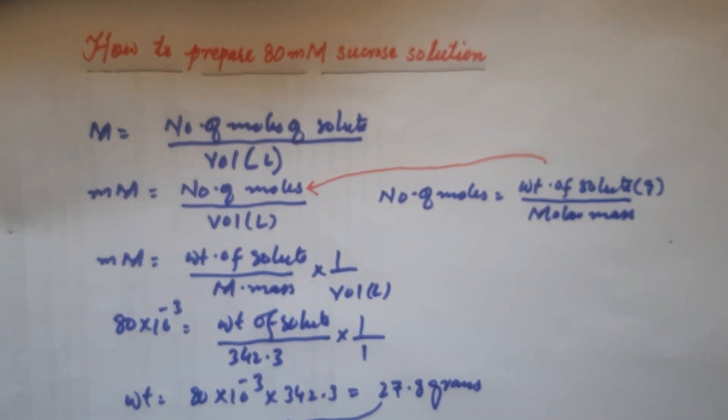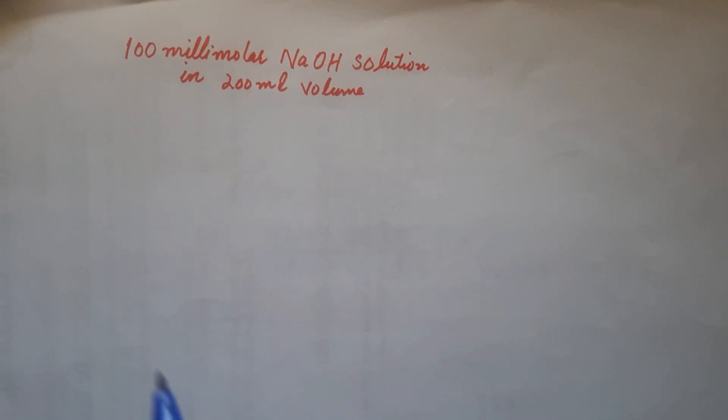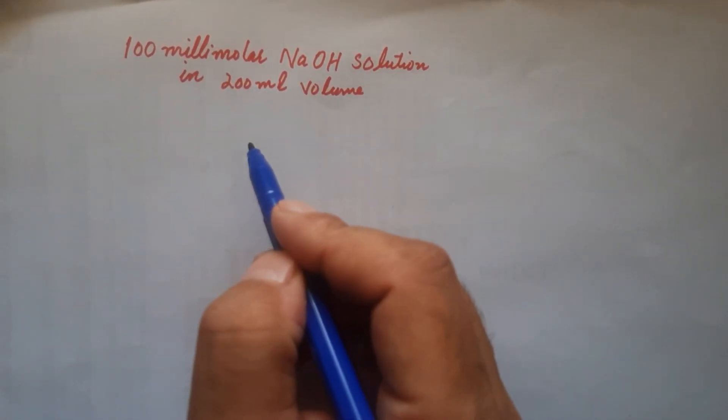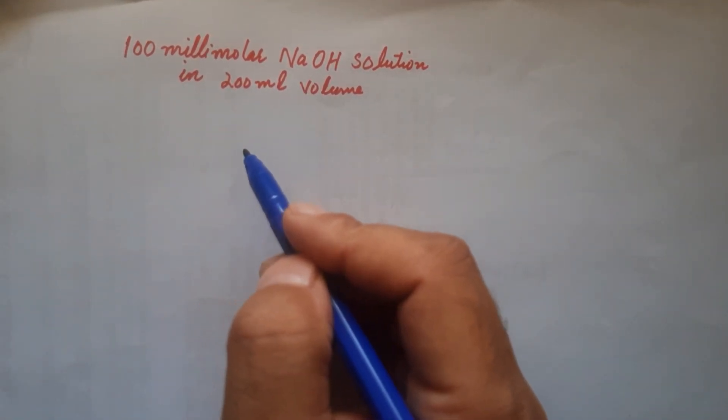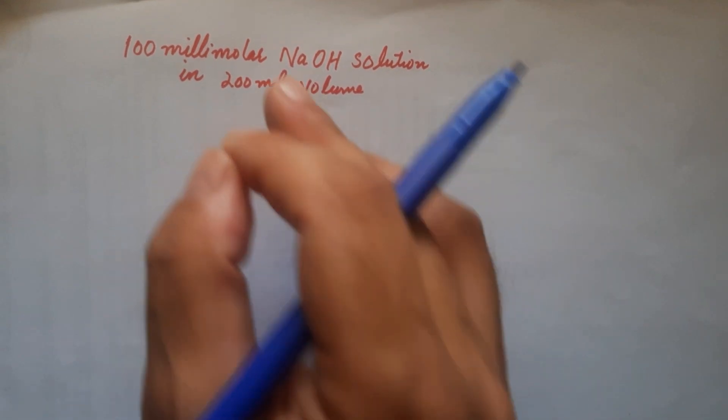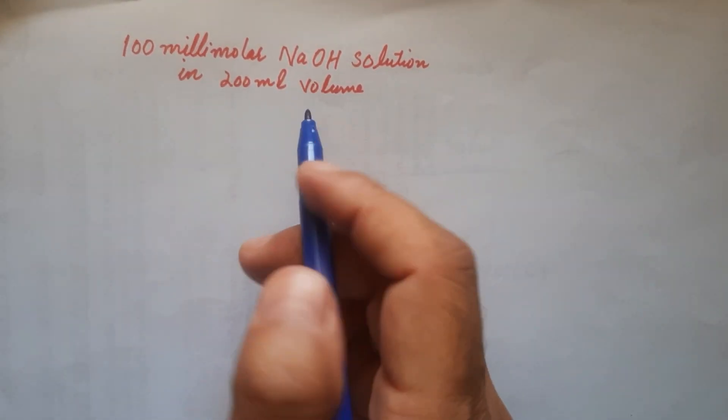Let me show you one more version of this problem. Here you can see we have been given 100 millimolar NaOH solution in 200 mL volume. Since the volume here has been specified, we'll use the formula.